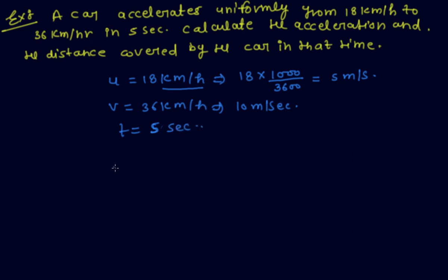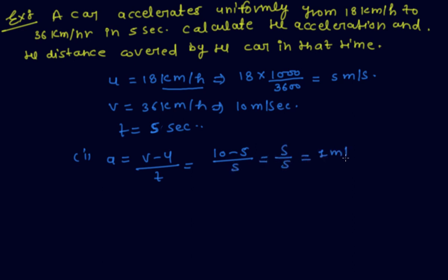Find the acceleration. Acceleration A equals change in velocity, final minus initial, by time: 10 minus 5 by 5, which equals 1 meter per second squared. This is the answer.